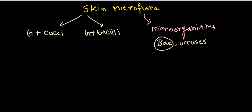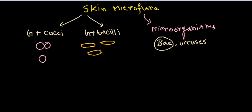Cocci means these bacteria are round, spherical-shaped. Bacillus are different — they are rectangular-shaped and sometimes oval-shaped. We can have both types of bacteria on our skin.